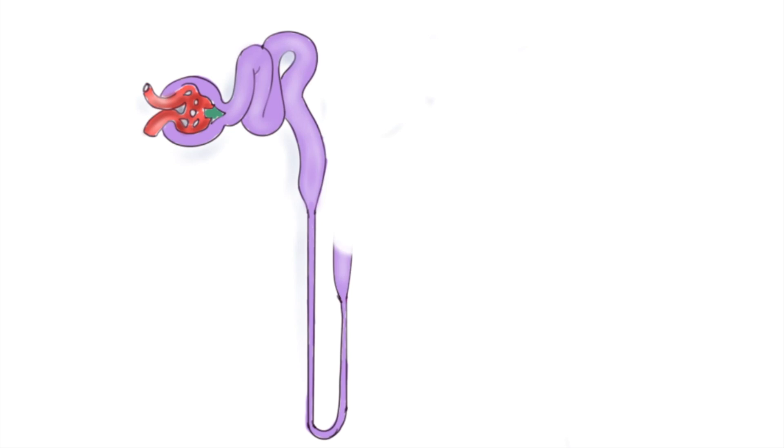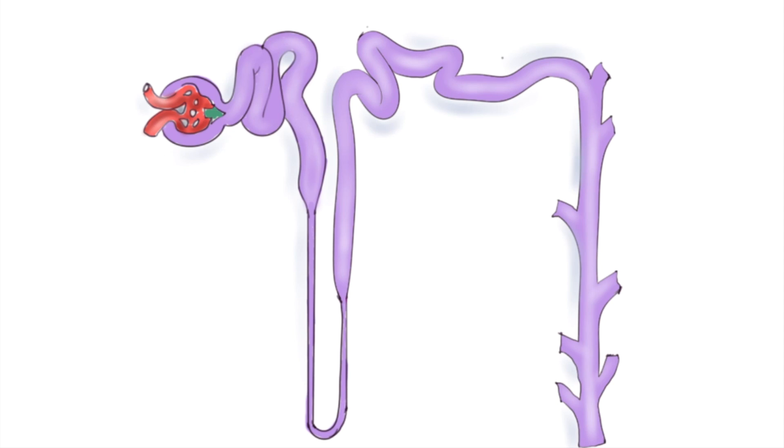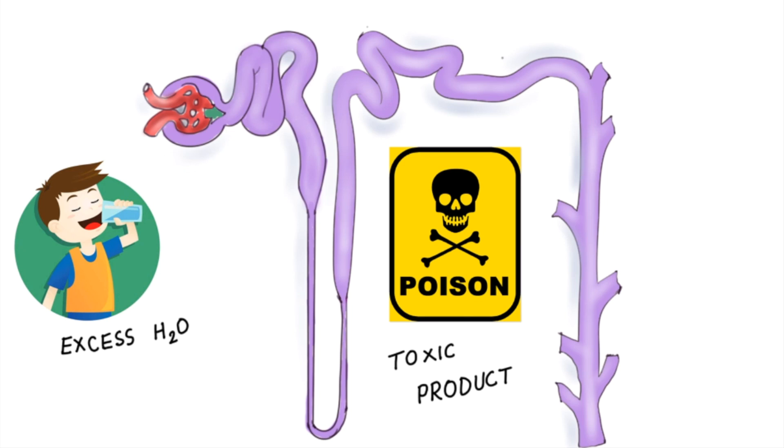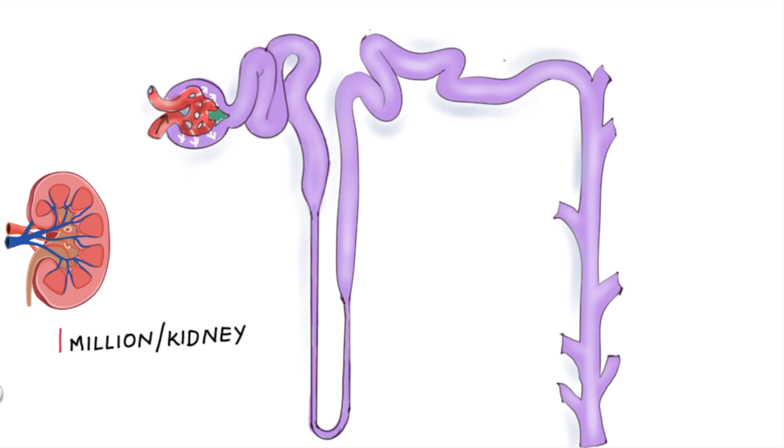Today we are going to be discussing the function of the nephron. Here we have our nephron, the unit of kidney mainly responsible for production of urine in order to get rid of excess water and toxic waste products. There are approximately one million nephrons in each kidney.